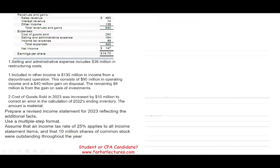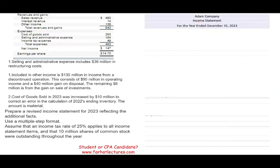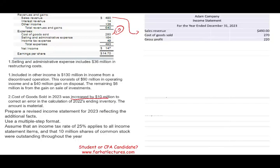Let's go ahead and start to prepare the income statement. We have the company name, the name of the statement, and 'for the year ended December 31, 2023.' Remember, the income statement covers a period of time, not a point in time. We start with sales revenue of $490 million, then deduct cost of goods sold of $270 million — not $280 million, because we deducted the $10 million prior period adjustment. Sales minus cost of goods sold gives us gross profit of $220 million.